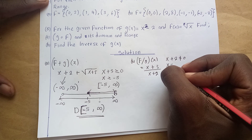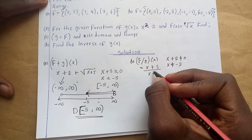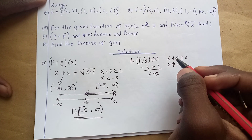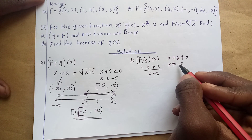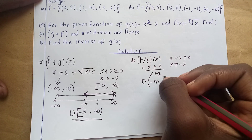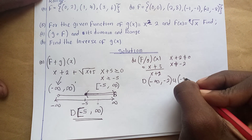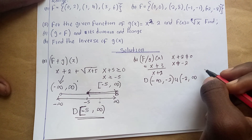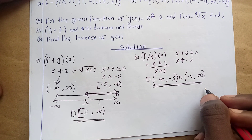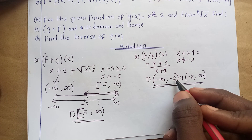Therefore x must not equal negative 2, because if we substitute negative 2 for x the expression becomes undefined. This function is only undefined at x = −2. Therefore its domain is (−∞, −2) ∪ (−2, +∞). You simply find where the function is undefined and exclude it using open brackets.